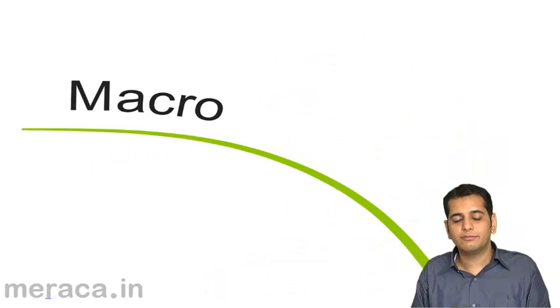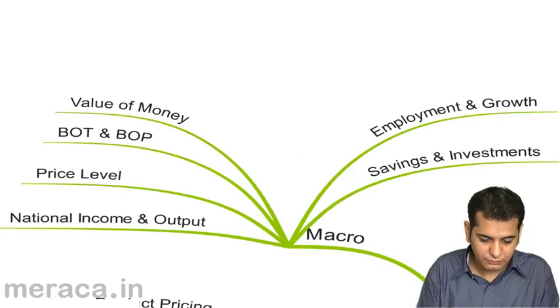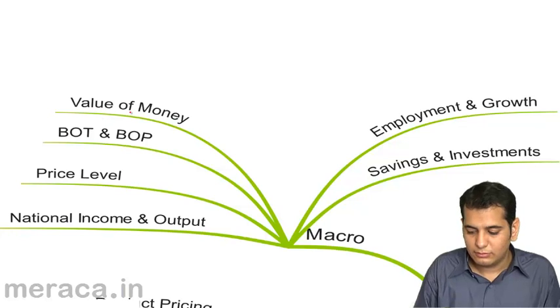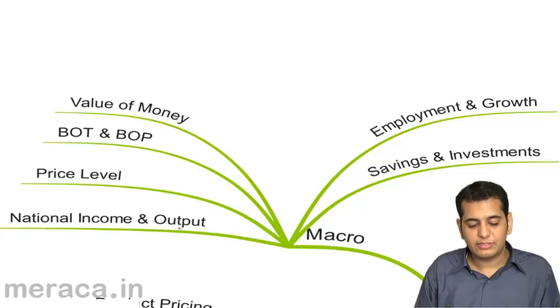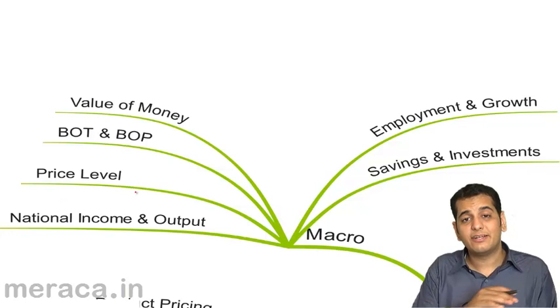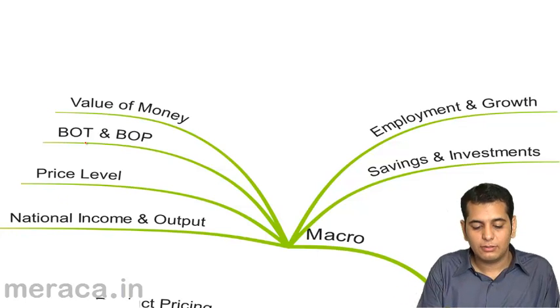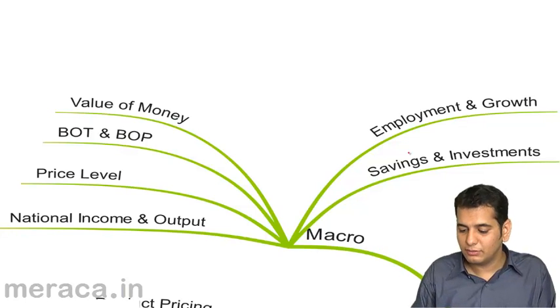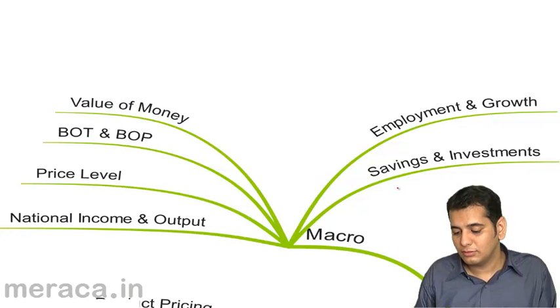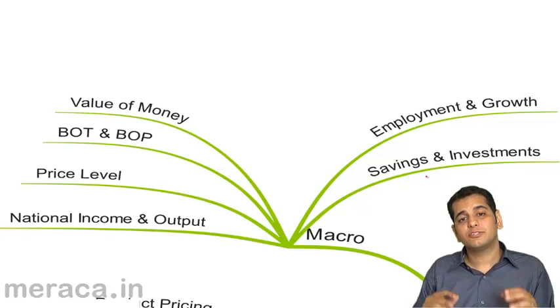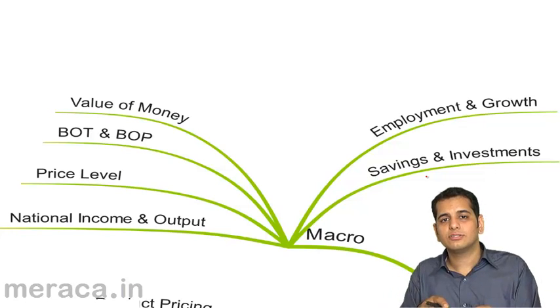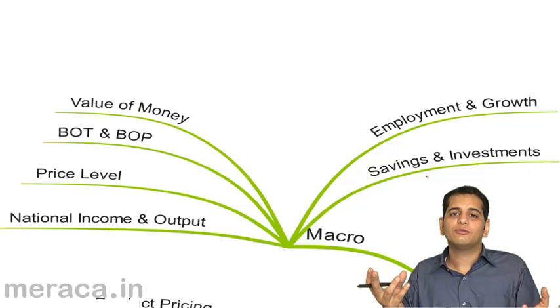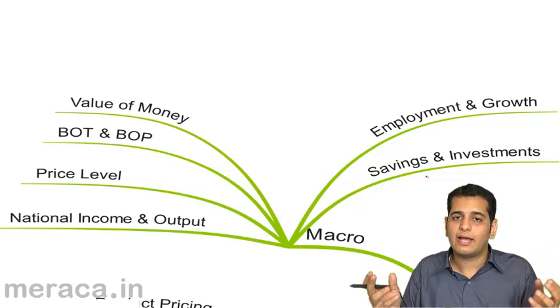Then we studied the factors of macroeconomics. What we did in macroeconomics was we studied national income and output, general price level, balance of trade and balance of payment, value of money in a country, employment in a country, savings and investment of the whole nation. These are the concepts which affect the nation as a whole. Macroeconomics is an economics of aggregates.